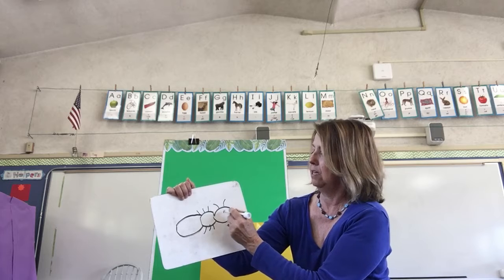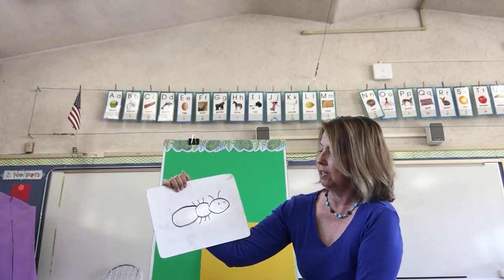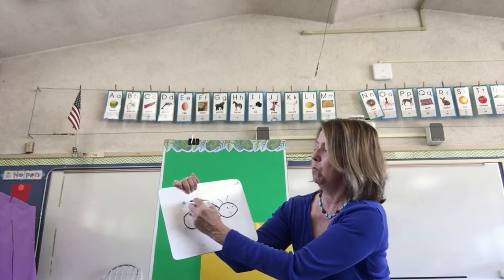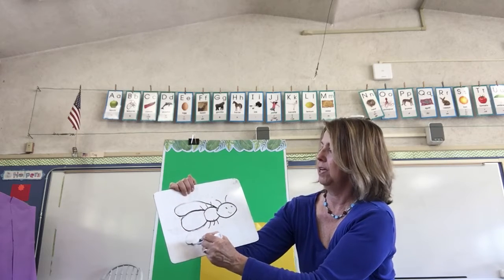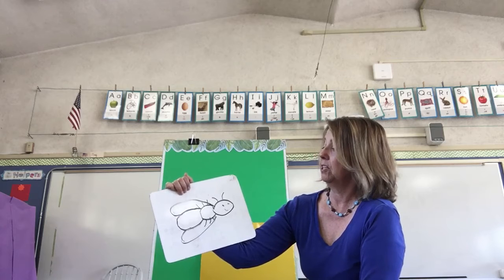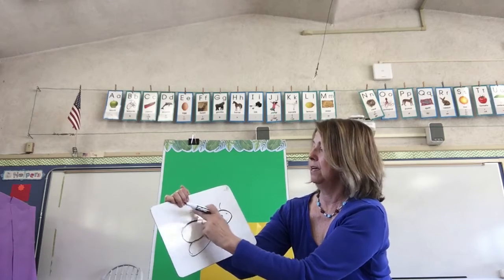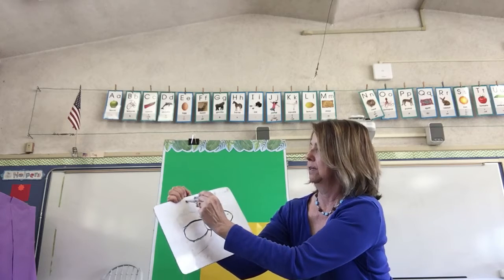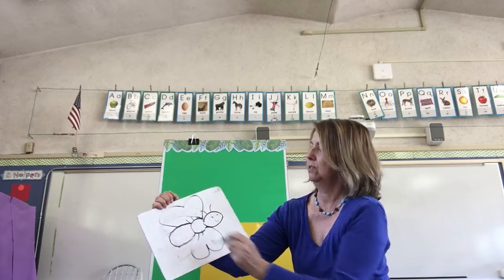This could be all different kinds of insects. This one kind of looks like an ant, but a lot of insects have wings. If I add wings it might look different — different types of wings. Maybe this kind of wing. That makes it look different also.